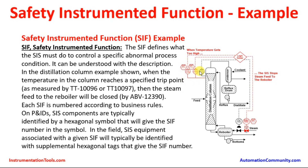Whenever there is over-pressure or high temperature in the column, two additional temperature transmitters — shown in red — are part of the Safety Instrumented System. These two temperature transmitters sense the temperature inside the vessel and send signals to the SIS logic solver. From the logic solver, the output goes to the EBV — emergency block valve. Here, the SIS stops the steam feed to the reboiler whenever the temperature inside the column exceeds the pre-set limits.